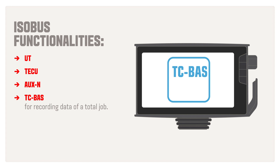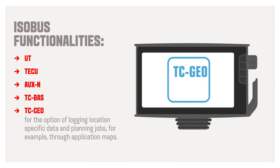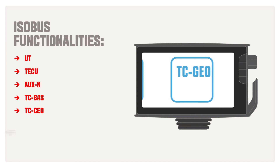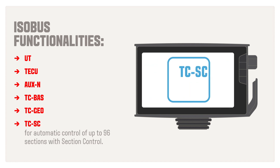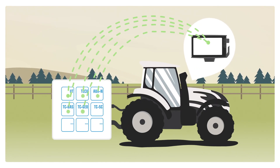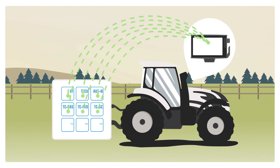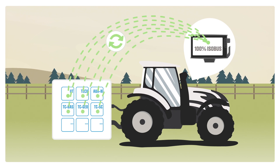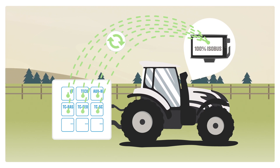TCBAS, for recording data of a total job. TCGEO, for the option of logging location-specific data and planning jobs, for example through application maps. TCSC, for automatic control of up to 96 sections with section control. The Vultra Smart Touch Terminal communicates with many Isobus standards without a problem. One terminal for specified Isobus standards.